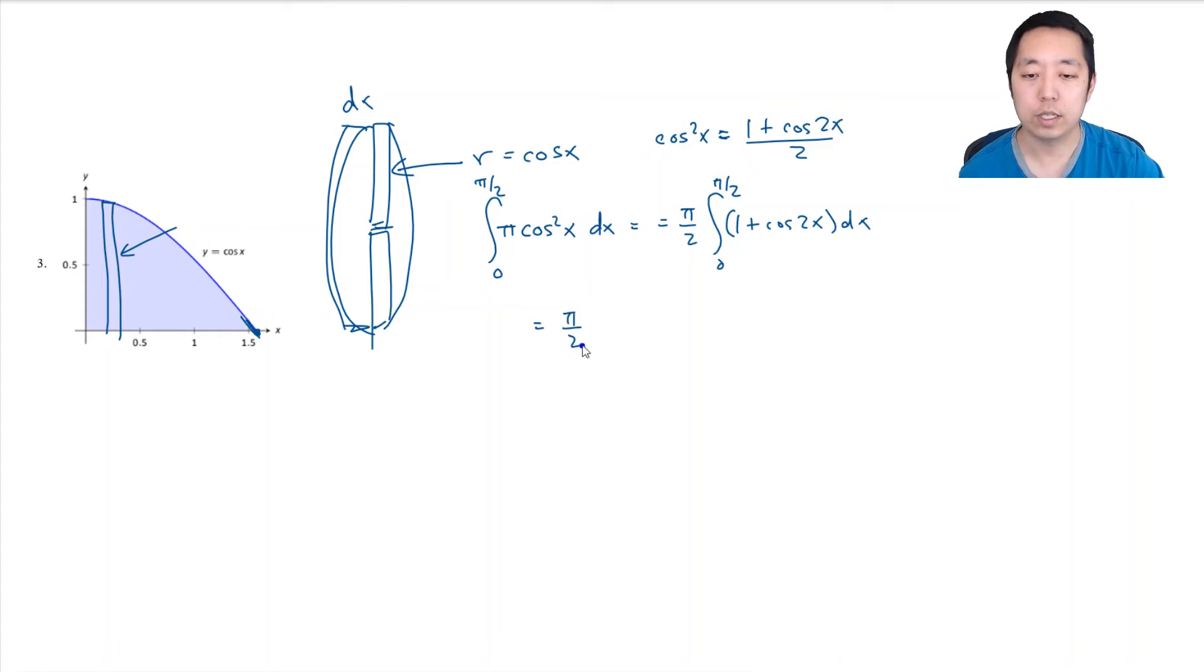And then I can do the antiderivative of these pretty easily. This is (π/2)(x + sin(2x)/2) from 0 to π/2. So this is (π/2) times (π/2 - 0 + (sin(π) - sin(0))/2). Both of these are just 0. Sin(π) and sin(0) are 0. So this is just π/2 times π/2. That's π²/4.